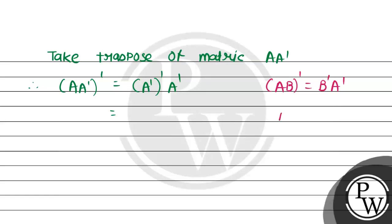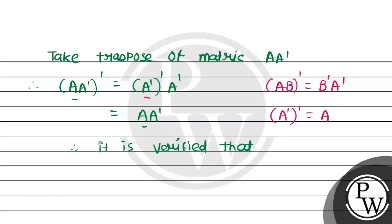Again, a second rule can be used here: the transpose of a transpose equals the original matrix. So (A')' = A, giving us A · A'. Since the transpose of AA' equals AA', it is proved that AA' is a symmetric matrix.